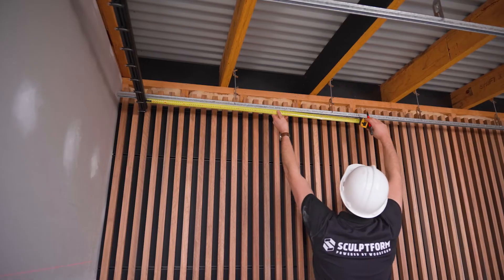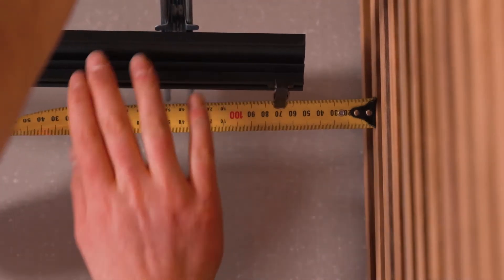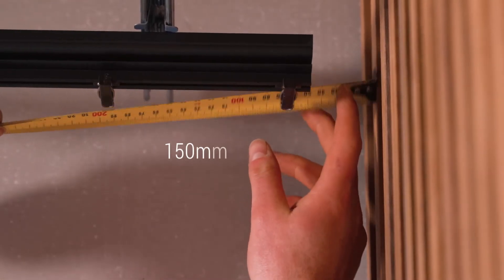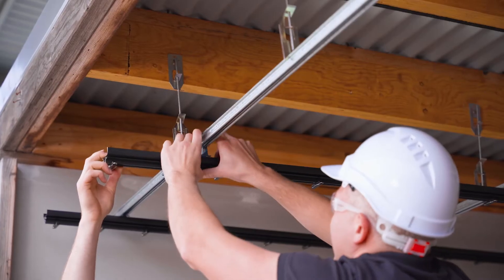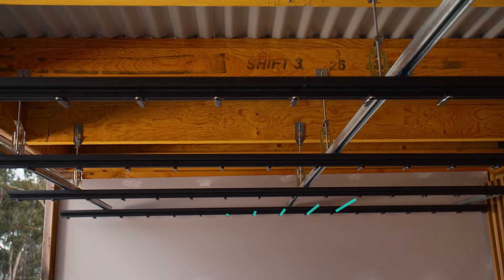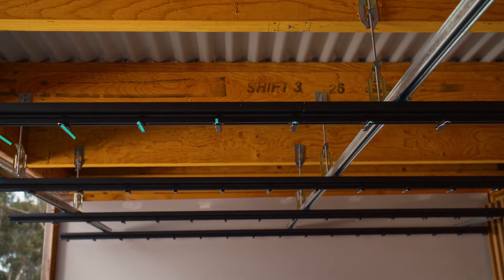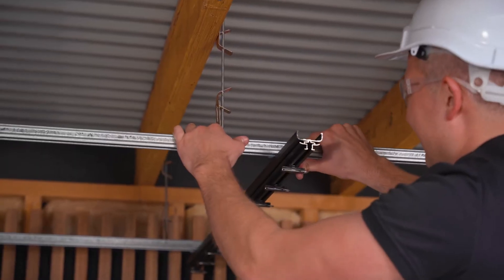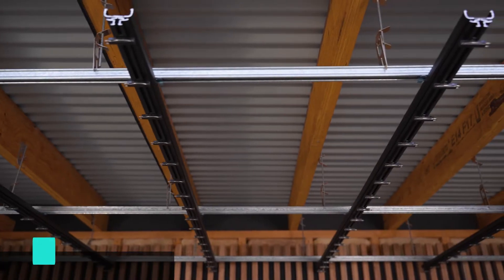Continue attaching the remaining tracks at the specified spacings, making sure the cantilever on each end is less than 150 millimeters, including your penetrations. When attaching the other tracks, make sure the clips are aligned before installing your acoustic backing.